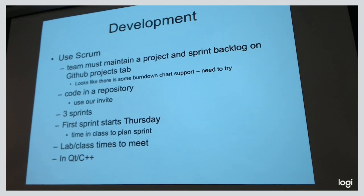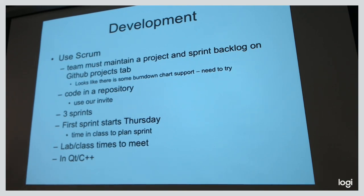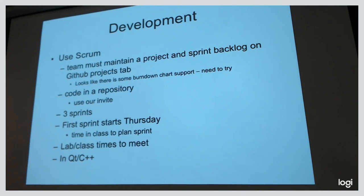We're going to do this in an agile way, using ideas from Scrum — stand-up meetings, sprints. I used to use Trello, which is a note card system, and GitHub Projects seems to match that. Somewhere you need to track tasks: things to do, tasks in process, and tasks done.